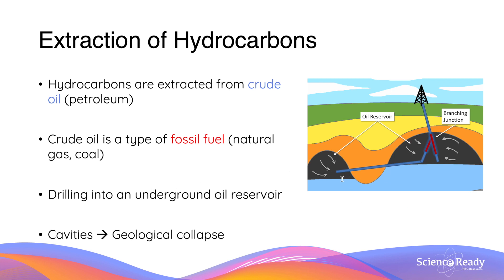Once these reservoirs are located, a fairly large hole is drilled into the ground to allow a transportation pipe to be delivered to the reservoir. Since these reservoirs are underground, complete extraction of crude oil will create cavities underground. These can cause the overlying structure to collapse due to the loss of mechanical support that was provided by the crude oil in the reservoir.